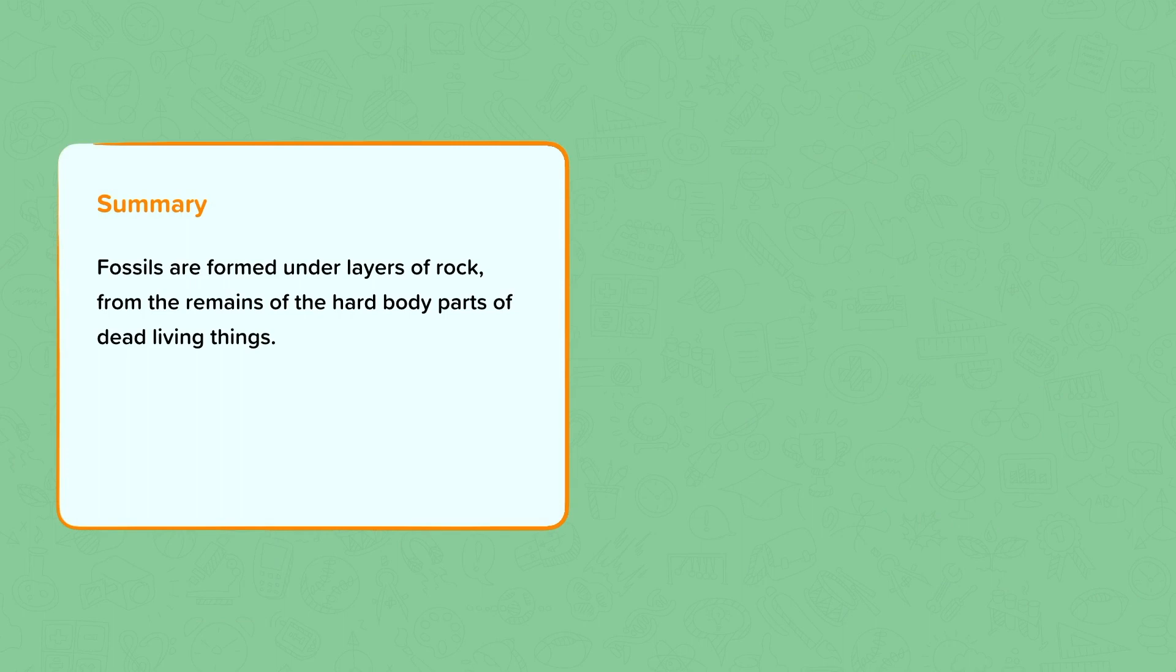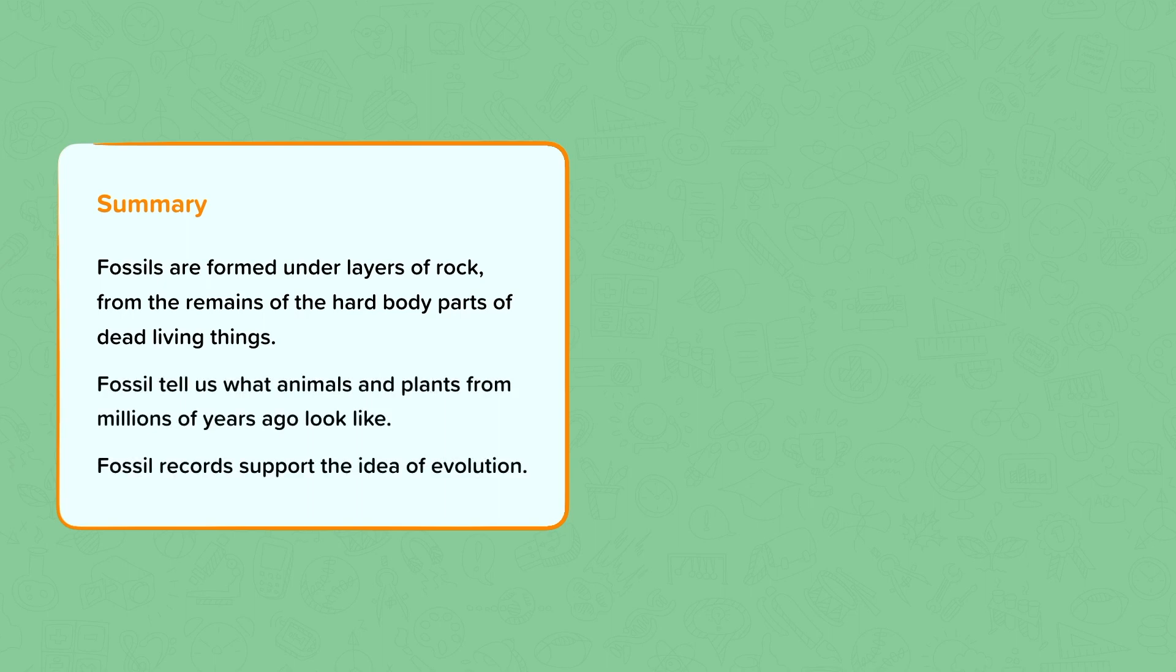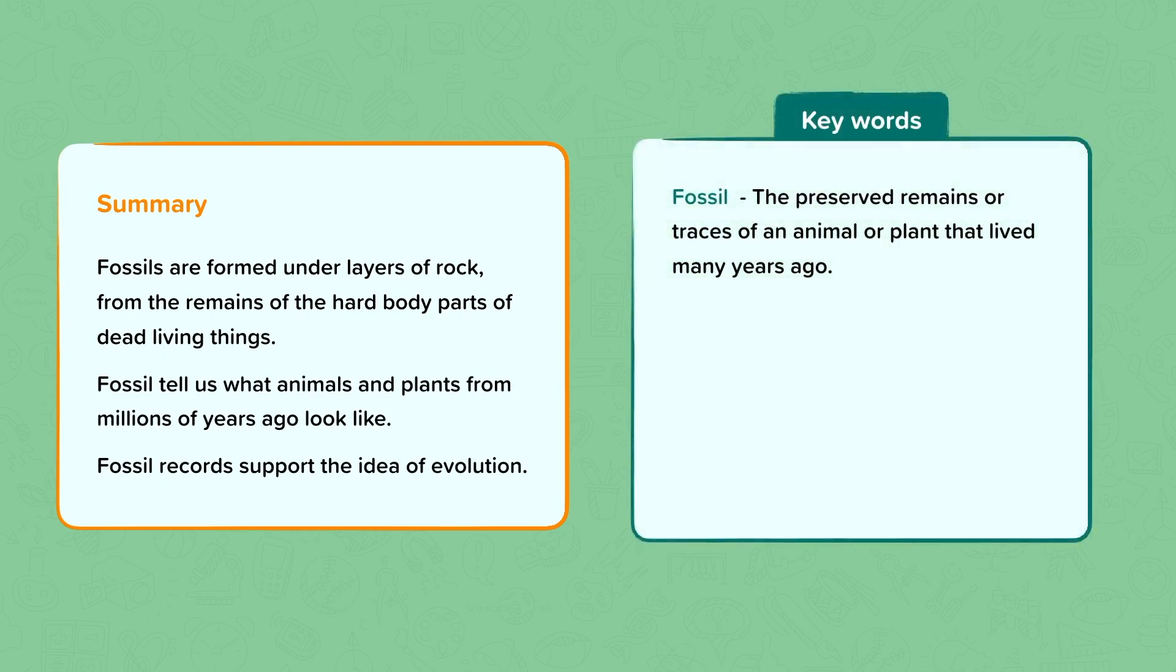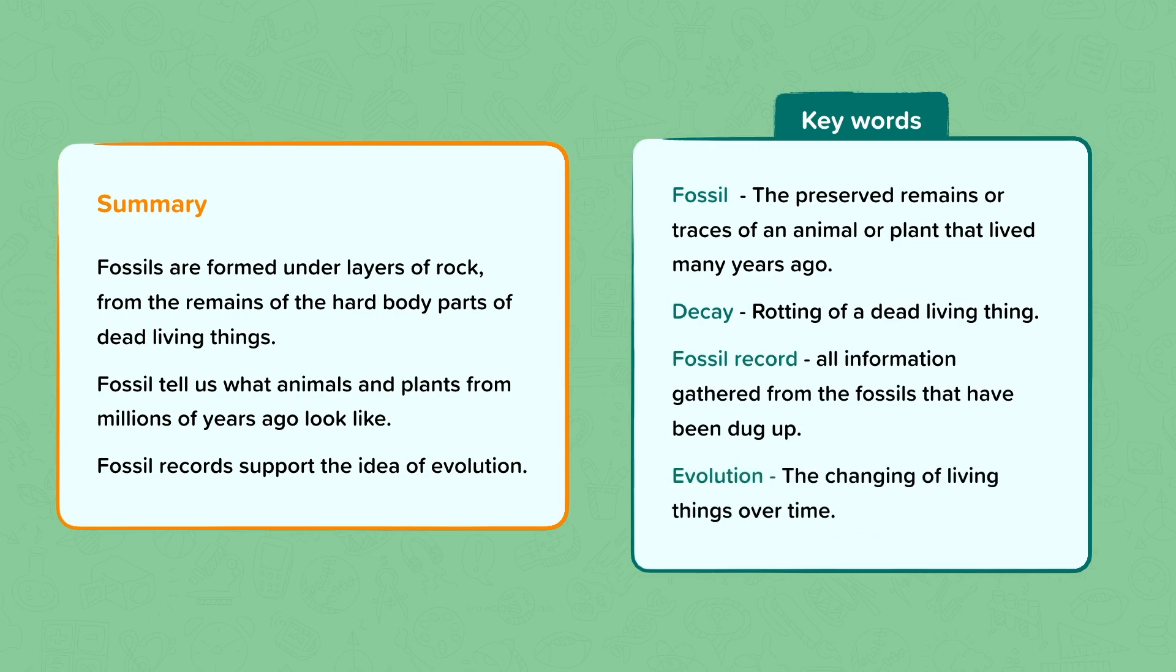Summary. In summary, fossils are formed under layers of rocks from the remains of the hard parts of dead living things. Fossils tell us what animals and plants from millions of years ago looked like. And fossils provide support for the idea of evolution. The key words were fossil, the preserved remains or traces of an animal or plant that lived many years ago. Decay, the rotting of a dead living thing, which will usually be the soft parts of the organism. Fossil record, all the information and fossils that we've gathered. And evolution, the changing of living things over time.